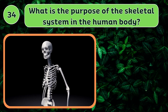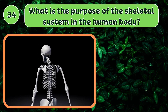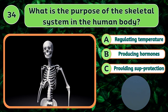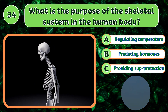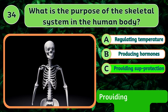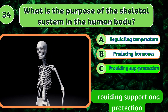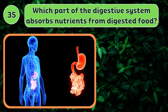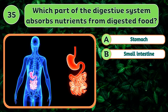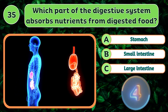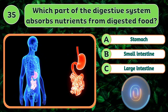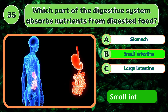What is the purpose of the skeletal system in the human body? Providing support and protection. Which part of the digestive system absorbs nutrients from digested food? Small intestine.